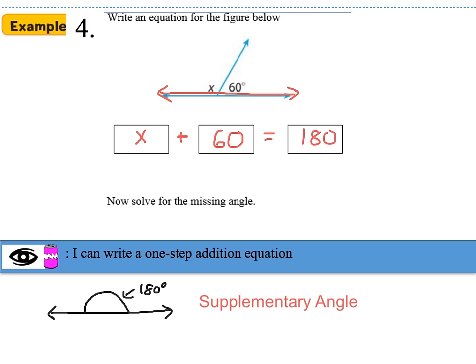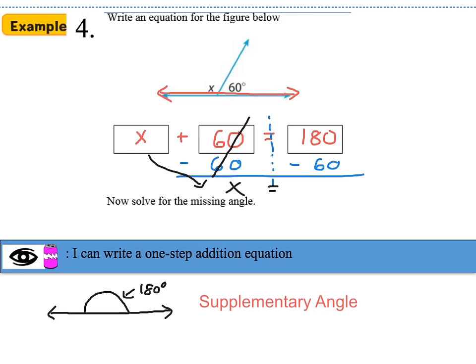Now that we've written our equation, let's solve it using the steps we've learned. Draw the fulcrum at the equal sign and start on the side with the variable. To isolate x, we go after the constant positive 60 by subtracting 60 on both sides — this is the subtraction property of equality. So 60 minus 60 goes away and x is all by itself. On the right-hand side, 180 minus 60 equals 120. So the missing angle is equal to 120 degrees.